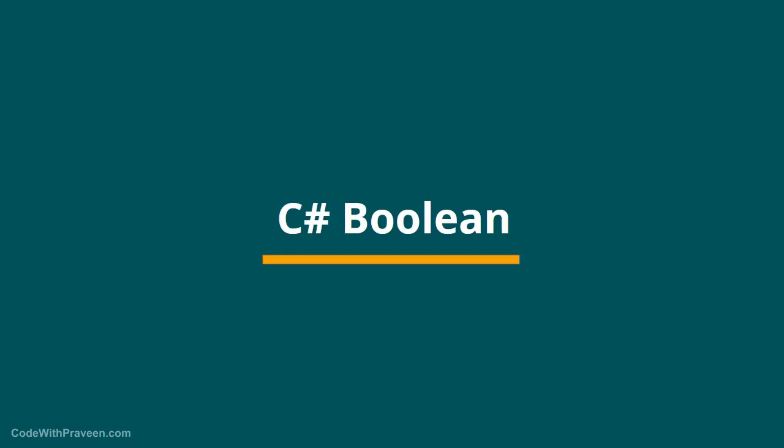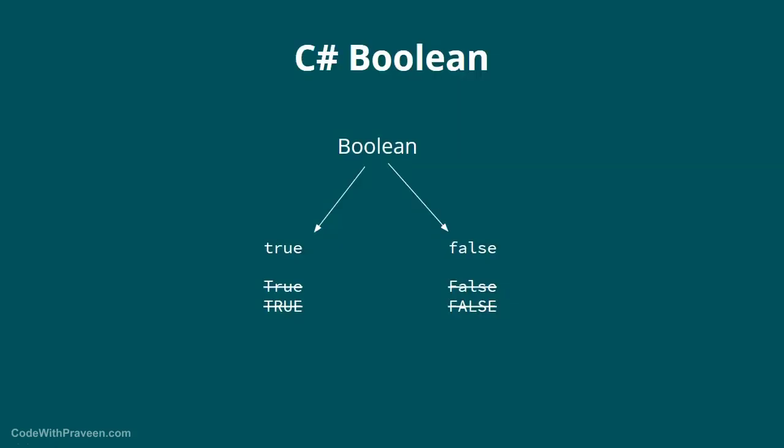In this video, we will see about Boolean variables in C#. Boolean variables are considered the simplest type in C# because they can take only two values, namely true or false.